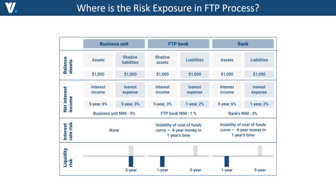There is volatility in the cost of funds curve because we don't know what the cost of funds will be in one year's time — so there is volatility in terms of four-year money after the first year. We don't know what the cost of funds will be after one year. This is where the volatility of the cost of funds curve comes from. There is positive maturity transformation because the asset has a longer maturity than the liabilities. But the business unit is fully matched — everything is closed and immune. The optimal situation is when the business unit is immune to any financial risks.